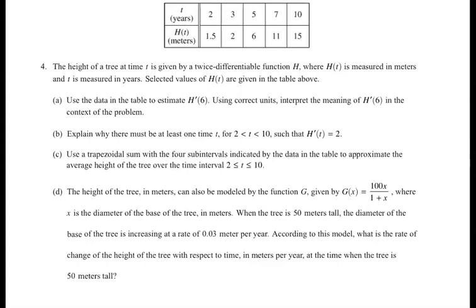Part B says explain why there must be at least one time from 2 to 10 where h prime of t equals 2. I'm sure this is going to mean mean value theorem. So I've got to find up here somewhere where a slope is going to give me 2. So if I do h of 5 minus h of 3, I'm going to be plugging in 6 and 2 here. So 6 minus 2 is 4 over 2 equals 2.